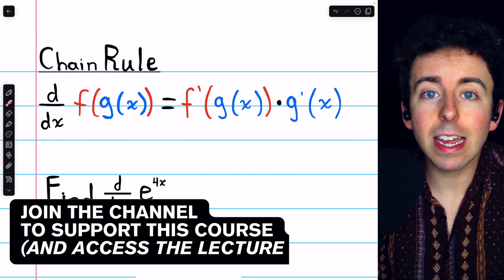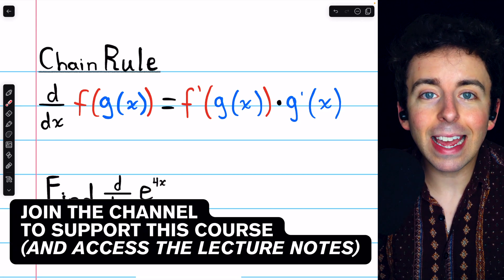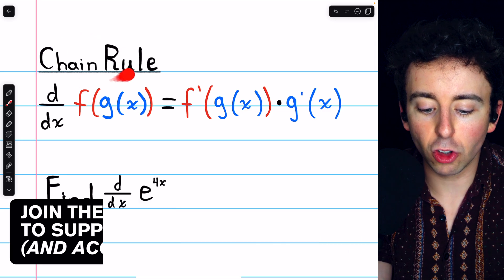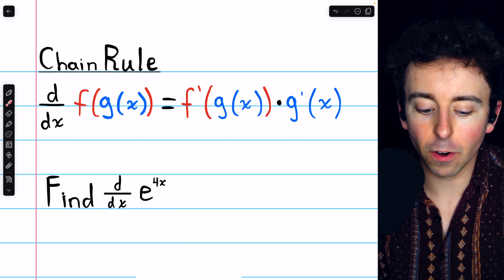e to the 4x is a composite function, so to take its derivative, we need to use the chain rule, which I've written here.